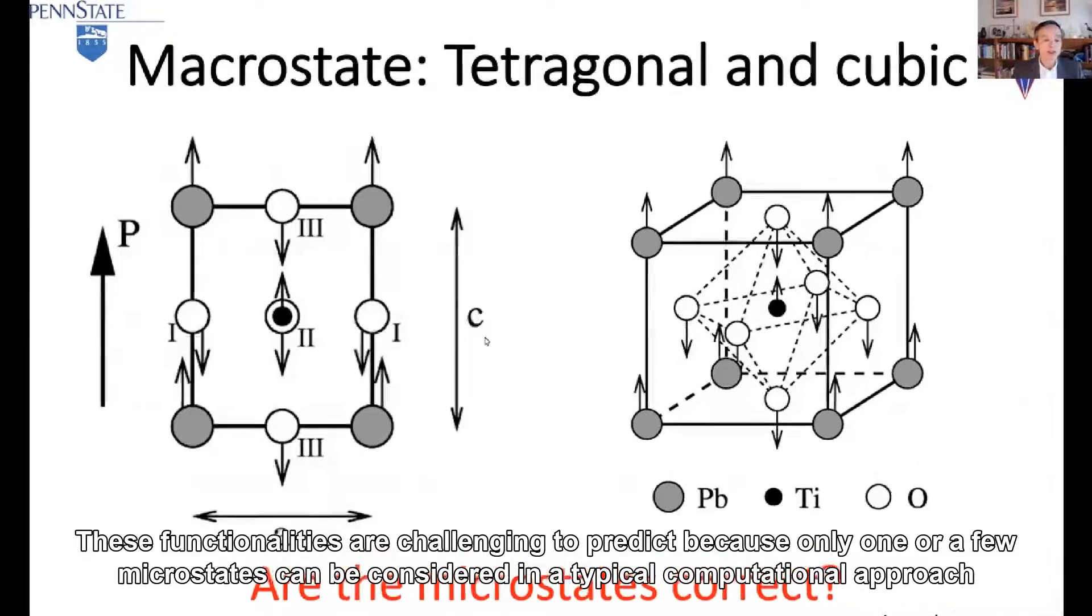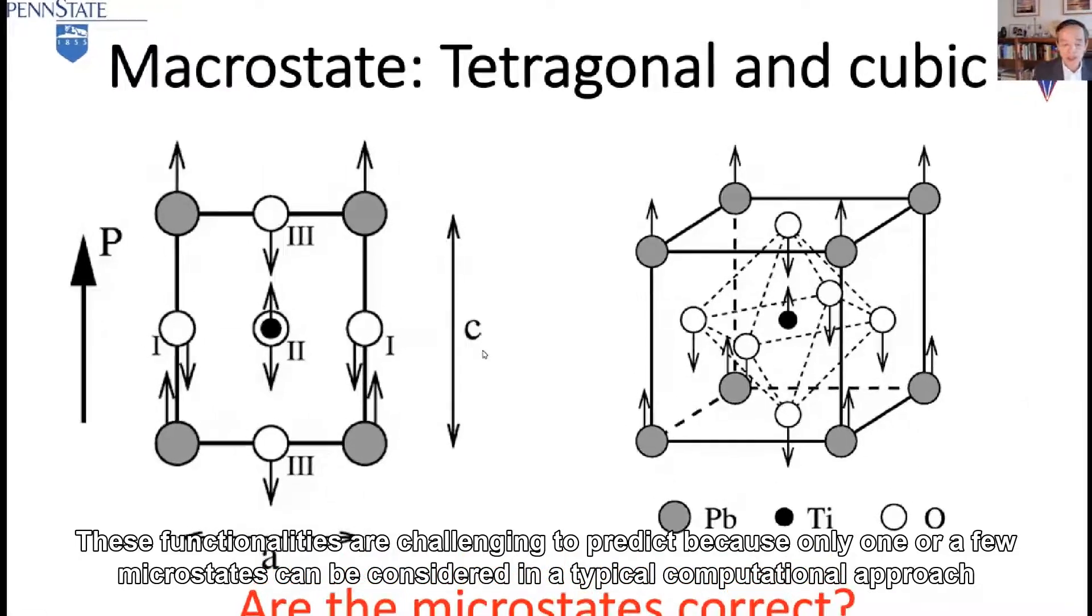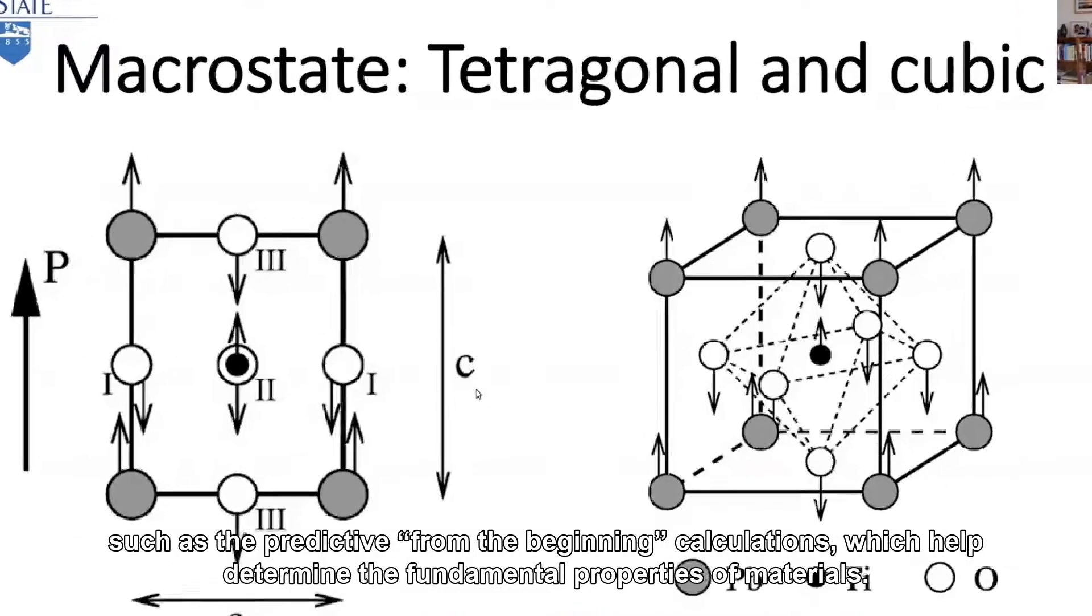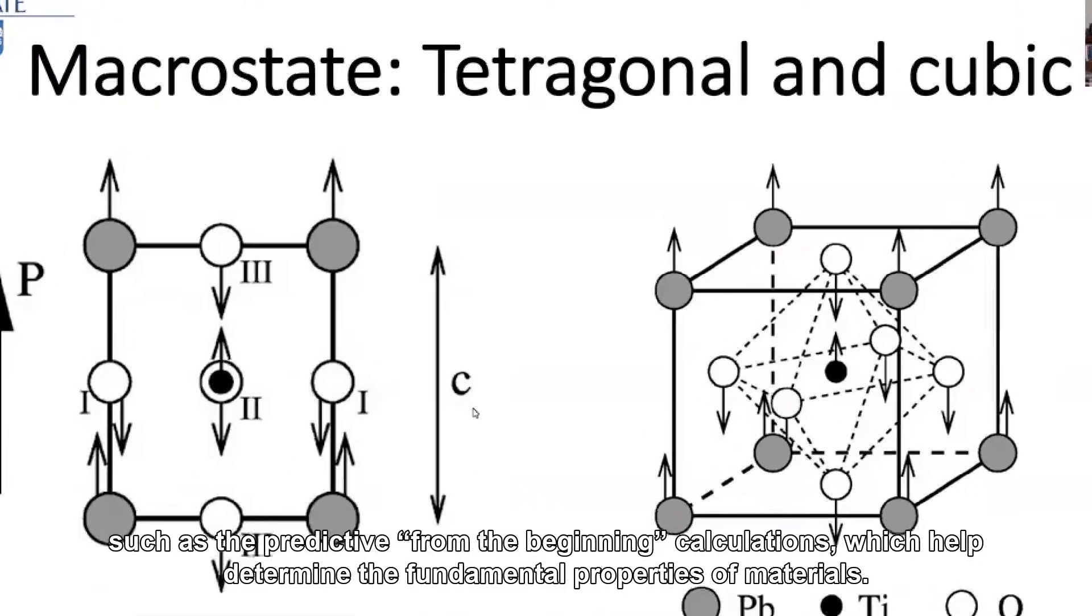These functionalities are challenging to predict because only one or a few microstates can be considered in a typical computational approach, such as ab initio calculations, which help determine the fundamental properties of materials.